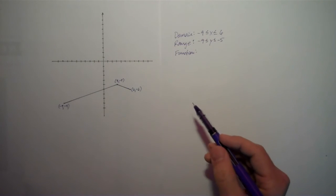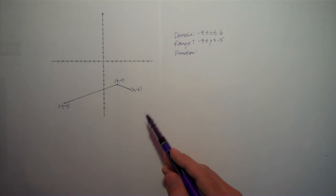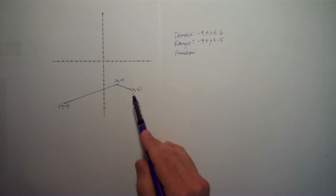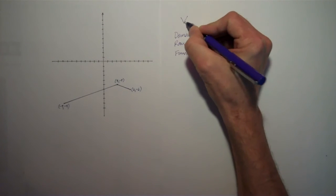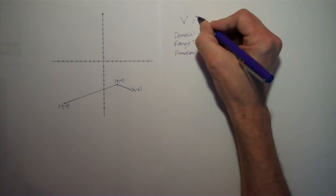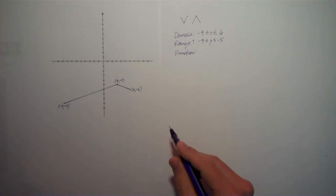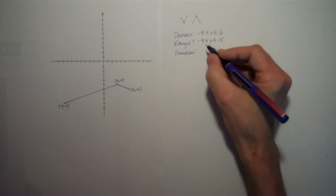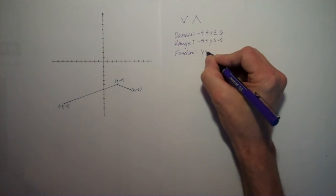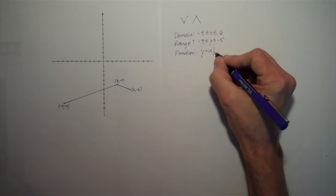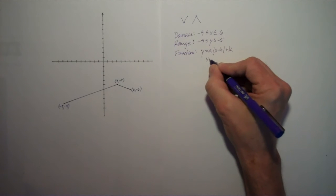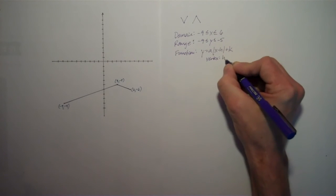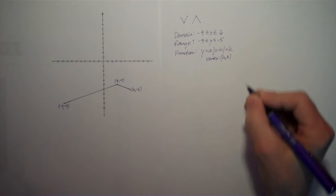First of all, we've got to look at this and say, what family does it belong to? It's obviously not linear because it changes direction. And it looks a bit like an inverted V. And any time you have a function that looks like a right-side-up V or an upside-down V, we need to think absolute value. And the form of an absolute value function is always going to look like y equals a times the absolute value of x minus h plus k.